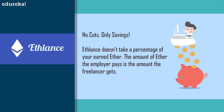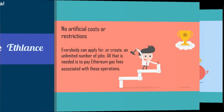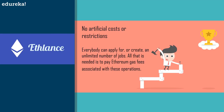There are no cuts and only savings — ethlance doesn't take a percentage of what you earn from the connections you made, and the amount of ether that the employer pays is the amount the freelancer gets. That's a very very big thing for freelancers. There are also no artificial costs or restrictions. Freshers World says that you can join for free and you'll get all those interview letters, but that's actually a sham because you will need to pay for the premium version to get those premium companies calling you for your CV, even though you might actually be a very good coder. Basically everybody can apply for a job on ethlance or create an unlimited number of jobs — all that is needed is to pay for the gas fees that are associated with these operations.